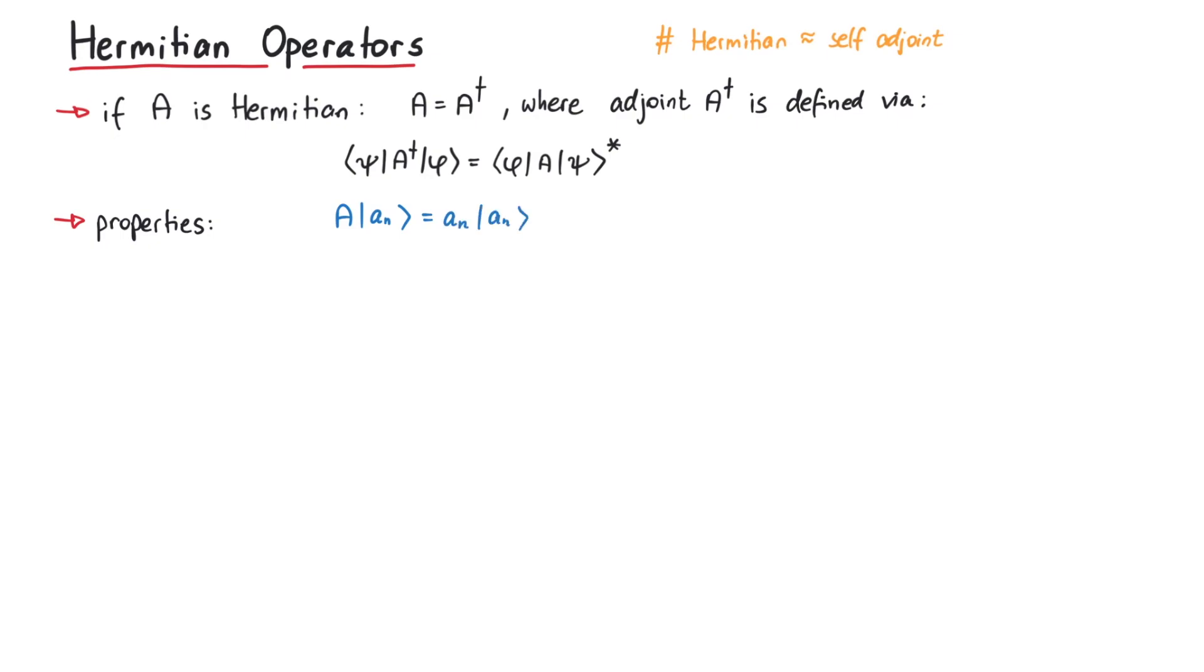The two most important properties of Hermitian operators are: first, their eigenvalues are real numbers, so an* = an, and second, eigenvectors that belong to different eigenvalues are orthogonal to each other, which we can express by using the Kronecker delta.